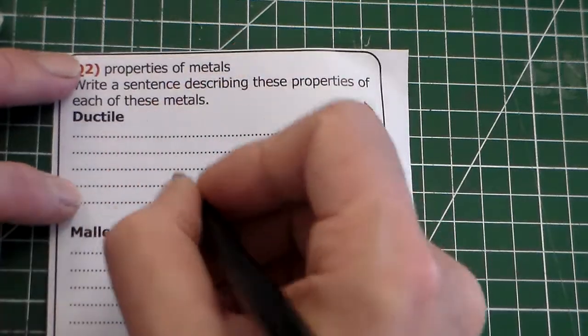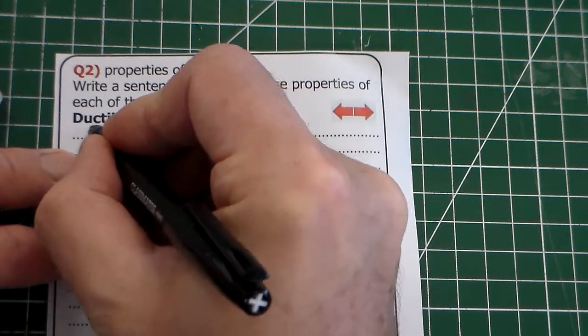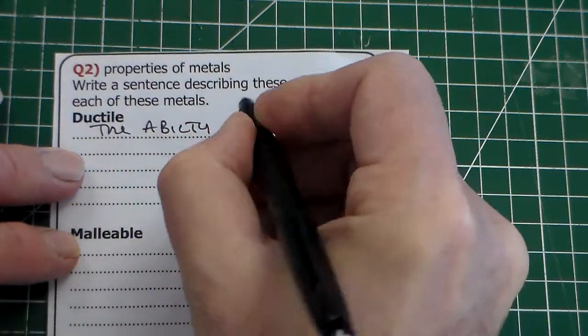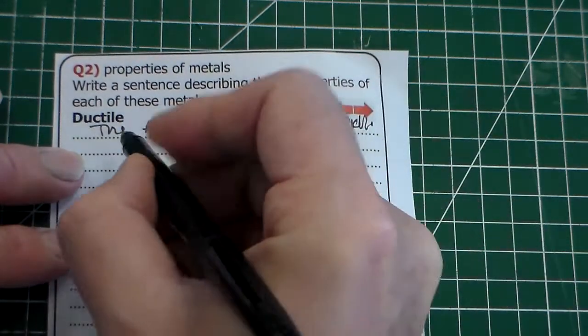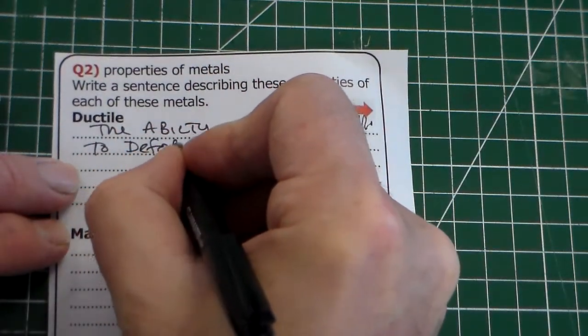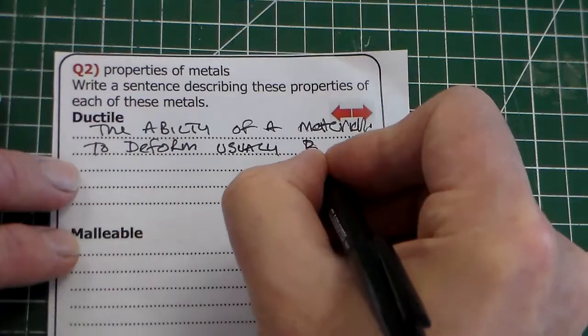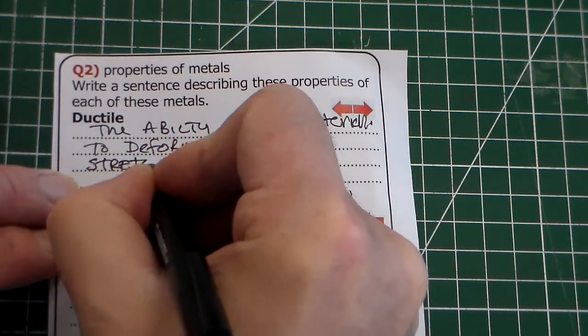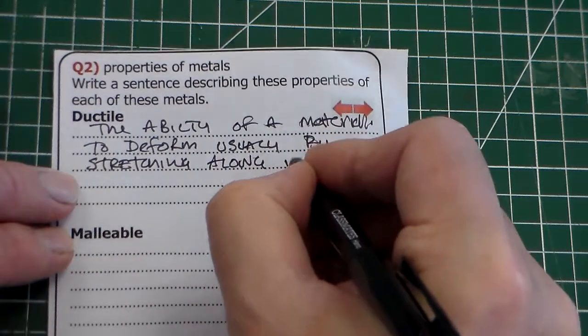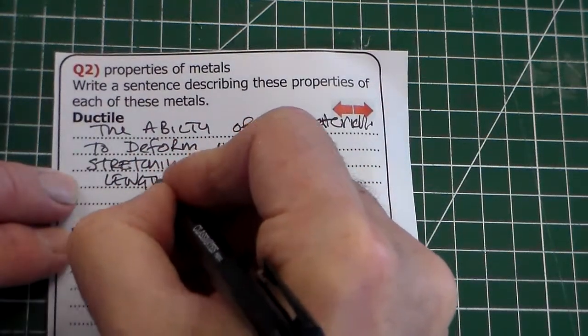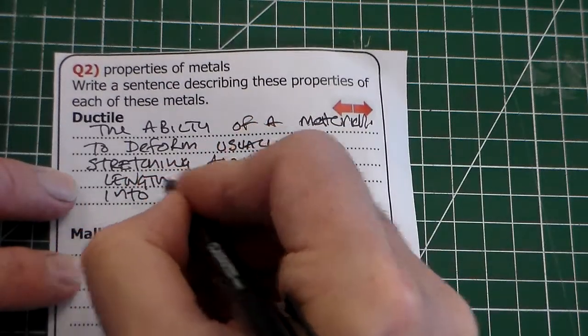So ductile. If we look at ductile, it is the ability of a material, I should say metal, to deform, usually by stretching along its length. And we can add can be pulled into wire.